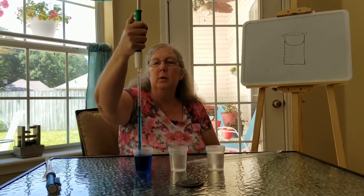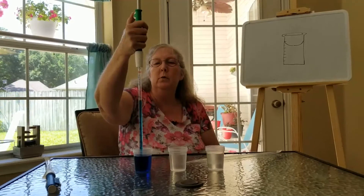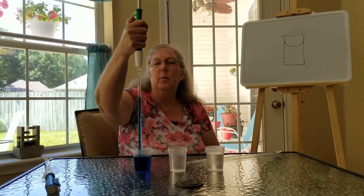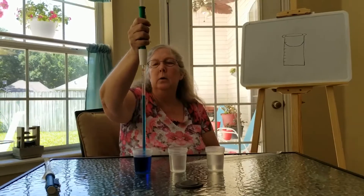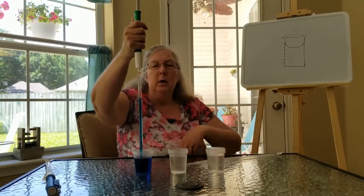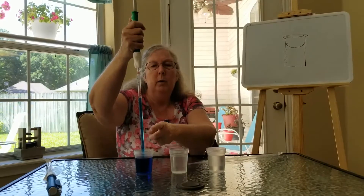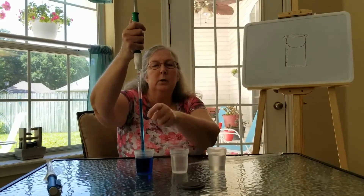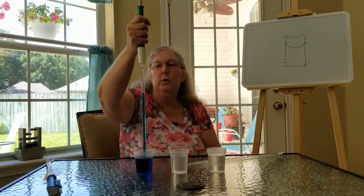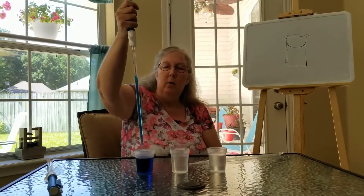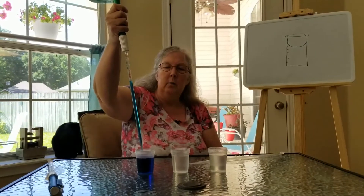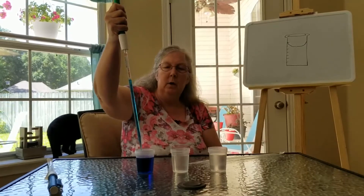There are numbers on the side, so depending on how much you have been told to measure — this is a 10 mil pipette, so if you were told to measure 10 milliliters you would bring it all the way up. Some pipettes count from the bottom up, so you bring it to the 10; some count essentially backwards, so you bring it to the zero.